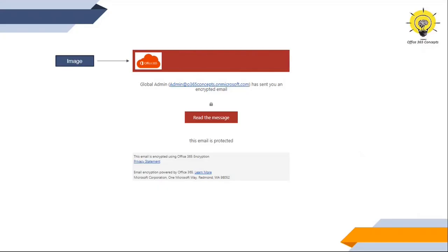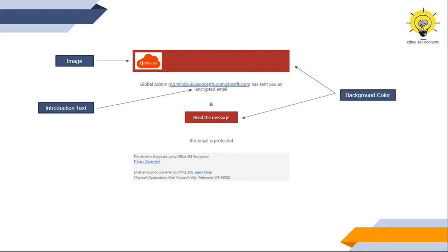We can add an image or a company logo within the email. We can add a custom text that will show next to the sender's email address. We can change the background color of the read the message button and the company logo. We can change the email text and we can add a disclaimer as well. This customization is possible using PowerShell commands.